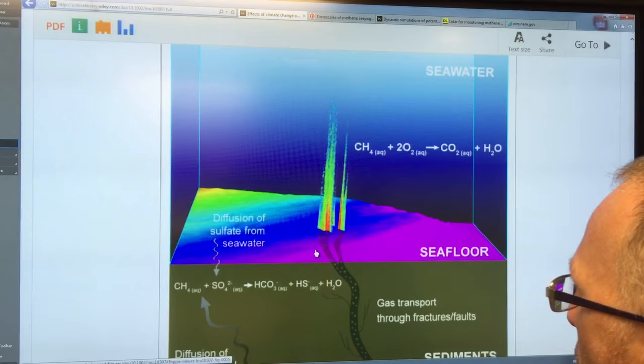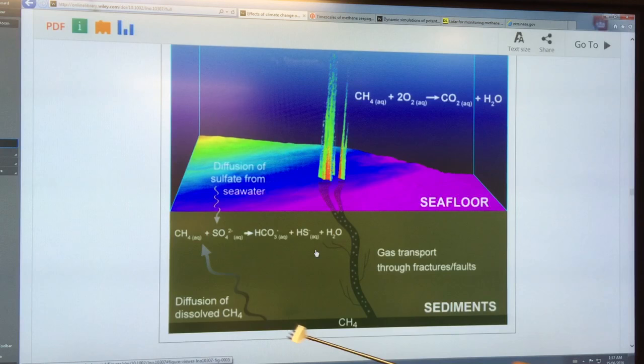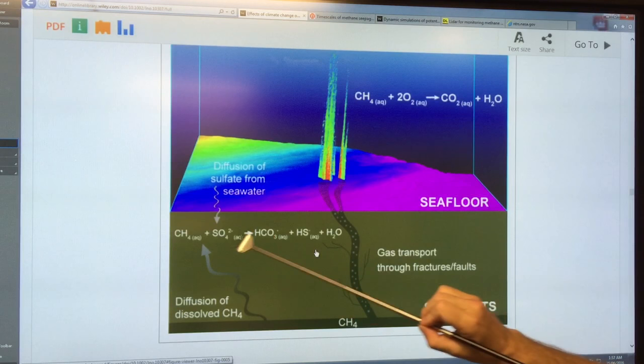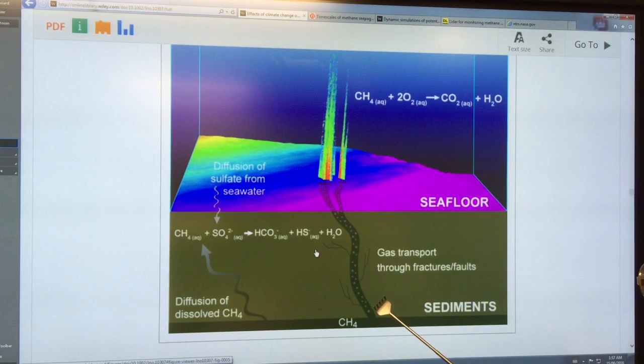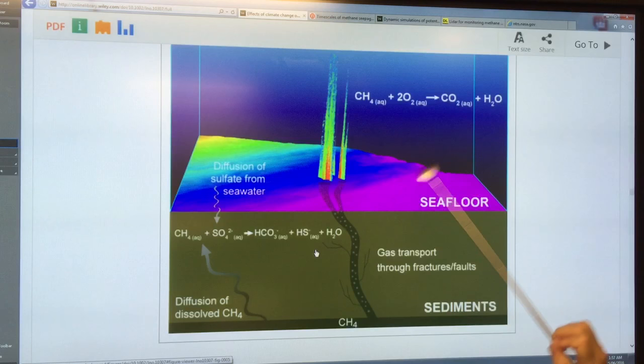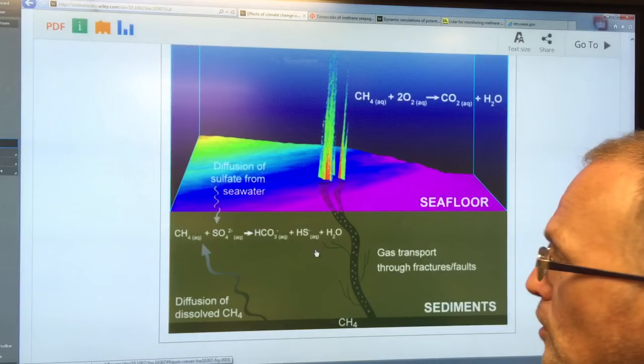So I think there's a diagram here. Yes. So if you have basically methane coming up through the sediments, diffusing up through, then it will react with the sulfur in anaerobic. There's no oxygen down here. It will react with the sulfur and be broken down or it gets up into the water column and then it can react with oxygen and be oxidized in the water column. So those processes are going on. So slow seeps and things, the methane, there's processes that can remove the methane.